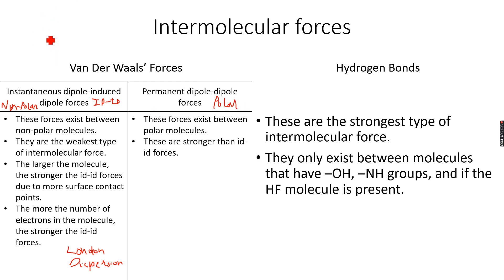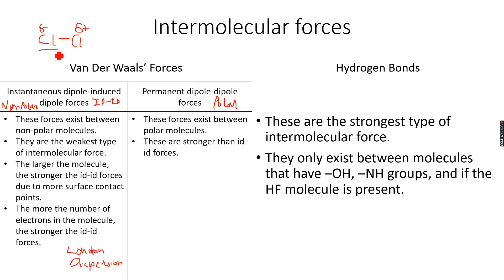Let's say we have a chlorine molecule, Cl2. This is non-polar because both chlorine atoms have equal electronegativities, so they equally share the bonding pair of electrons. Now, electrons are in continuous motion — they are not stationary. Because of this, sometimes most of the electrons in the molecule may move towards one chlorine atom, giving it a delta negative charge, and therefore leaving a delta positive charge on the other chlorine atom.